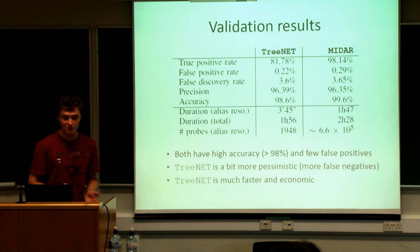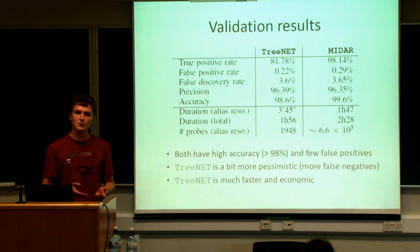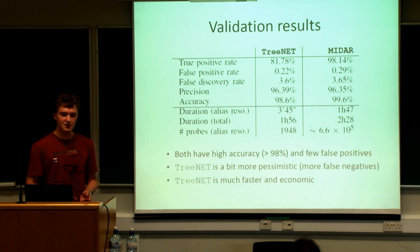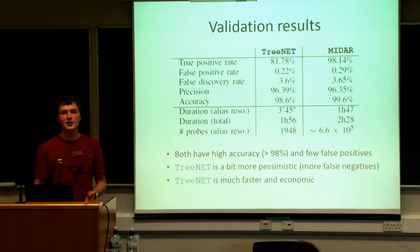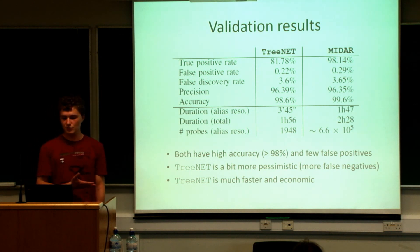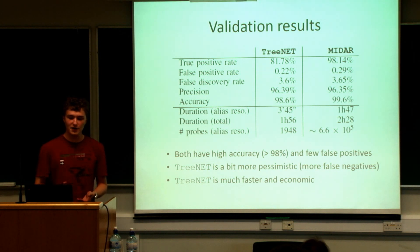Here are the validation results. The first main result is that both tools have high accuracy — above 98% — and very few false positives. Despite being a bit more pessimistic, with more false negatives than MIDAR, Trinet is actually much faster and more economical in terms of probes. The alias resolution part of Trinet — fingerprinting and actual resolution — lasts only about four minutes, while MIDAR takes almost two hours. Moreover, Trinet uses fewer than 2,000 probes for this process, while MIDAR uses hundreds of thousands of probes.